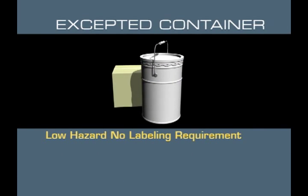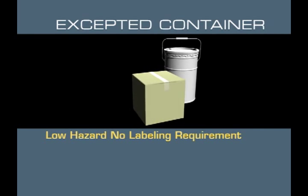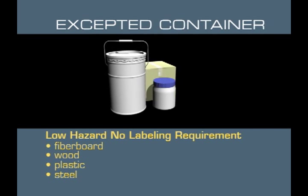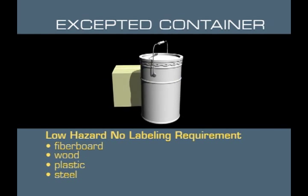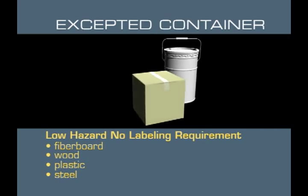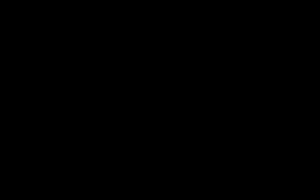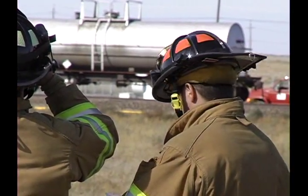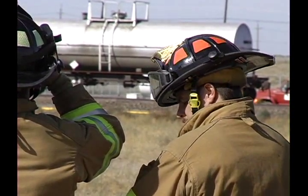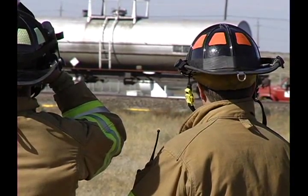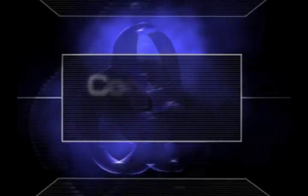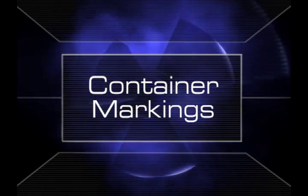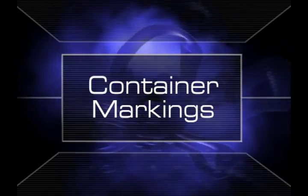Accepted containers carry low-level radiation and can be made of fiberboard, wood, plastic, or steel. They are called accepted containers because they present an extremely low hazard and do not require labeling. Every incident is different, but you need to know how to identify containers to get a general understanding of what hazardous materials may be on scene. Once you've identified the shape of the container, you are ready to interpret their markings to determine what chemicals you are dealing with.